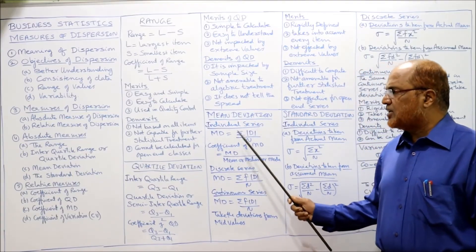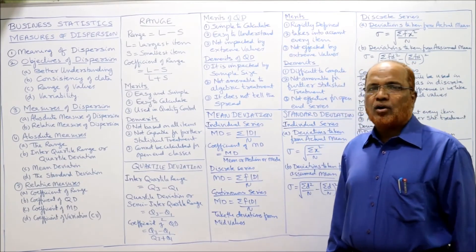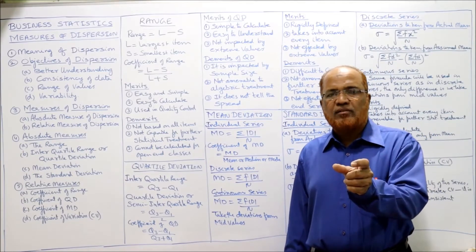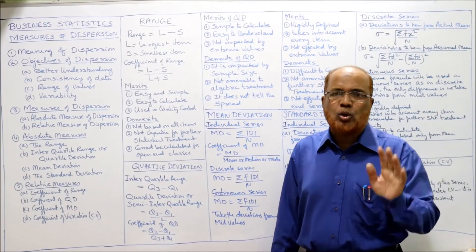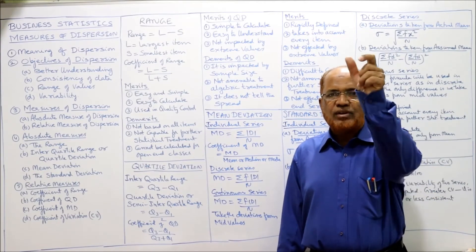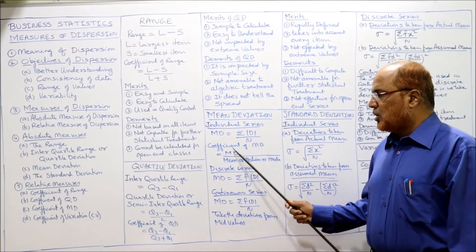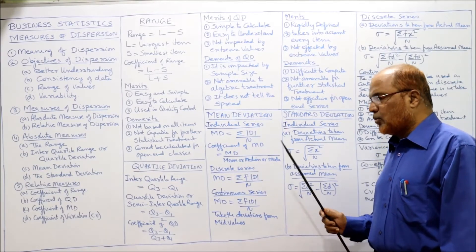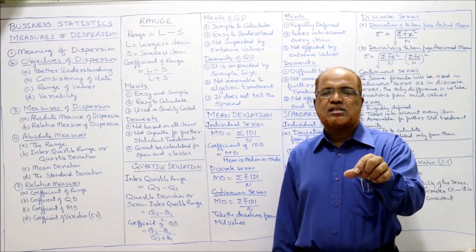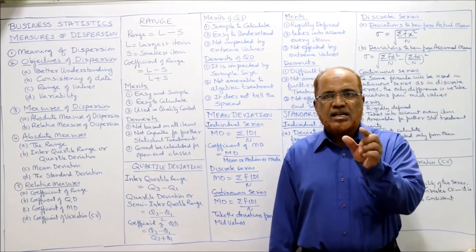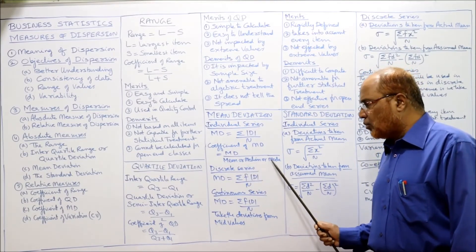The coefficient of mean deviation is mean deviation divided by mean, median, or mode — whichever measure you took deviations from goes in the denominator. If deviations were taken from mean, then mean is in the denominator; if from median, then median; if from mode, then mode. For discrete series, mean deviation equals summation of f mod D divided by n — first calculate mod D, then multiply by frequency. For continuous series, the formula is the same, except deviations are taken from mid-values.